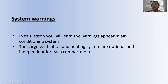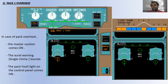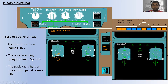The cargo ventilations and heating systems are optional and independent for each compartment. You can see the control panel and the system display with the engine warning display on the bleed page. In case of pack one overheat, the master caution comes on in amber color, and a single chime oral warning sounds.